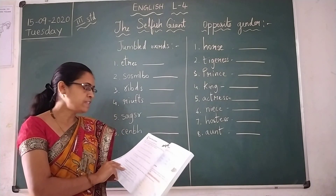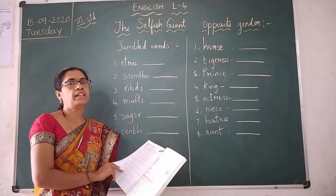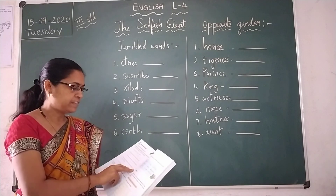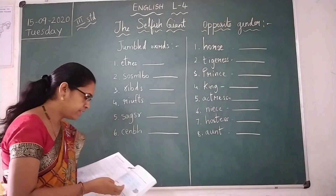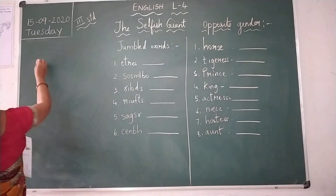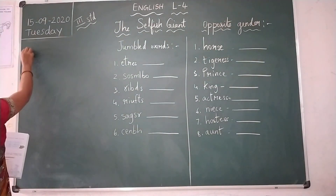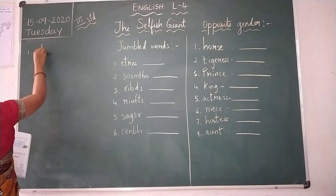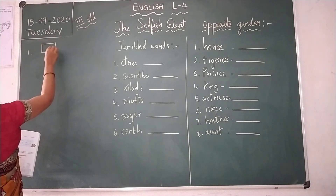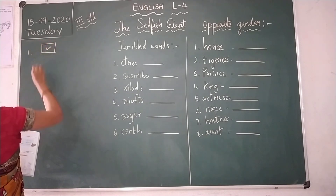First one: Jane lives in a castle. Jane lives in a castle — that is correct. This one is correct, so you will mark it like this.